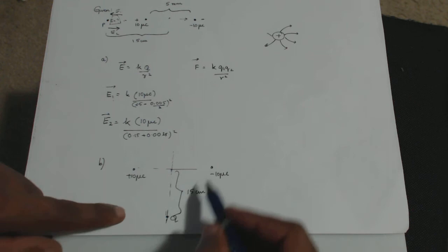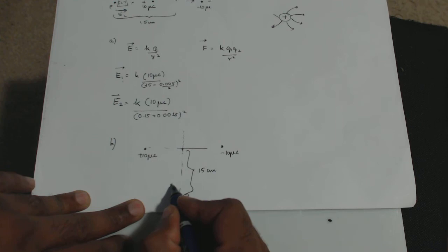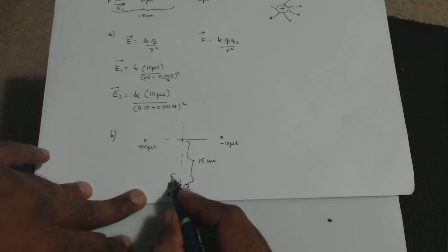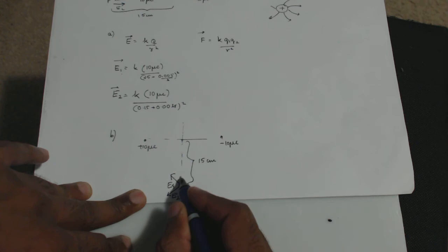At point Q, there's an electric field E1 due to the positive charge pulling in one direction, and E2 due to the negative charge pushing in another direction. Since they're vectors at an angle, you need to add the x-components together and the y-components together to find the net field. If anything's unclear, drop a message and we can go over it in another video. Sorry for the delayed response — much love, take care, bye!